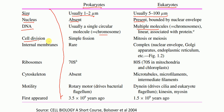And cell division. What type of cell division occurs in prokaryotes? Simple fission is the type of cell division that occurs in prokaryotes, whereas in eukaryotes the cell division is mitosis or meiosis. And internal membranes — in prokaryotes, the presence of internal membranes is rare, whereas in eukaryotes, complex internal membranes are present, for example, nuclear envelope, Golgi apparatus, endoplasmic reticulum, etc.